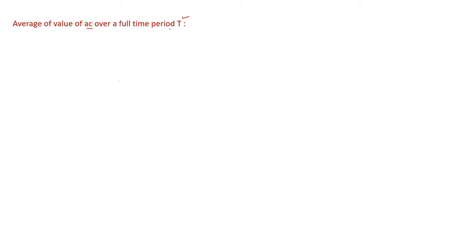We want to find the average value of AC over a full time period T. Because it is a continuously varying quantity, to find the average we need integration. The definition of average value of AC over a full time period T is: total charge divided by total time — that is, charge flowing in time period T divided by T. So we first find the total charge flowing in time T, then divide by capital T.